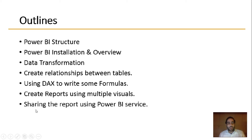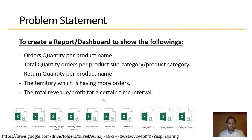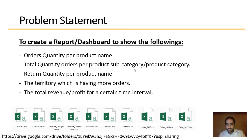After that we are going to share the final reports with the customer. The problem statement is this: we need to create a visual report showing the order quantity per product, per product subcategory, and per product category — so we can understand which category and subcategory is performing better.